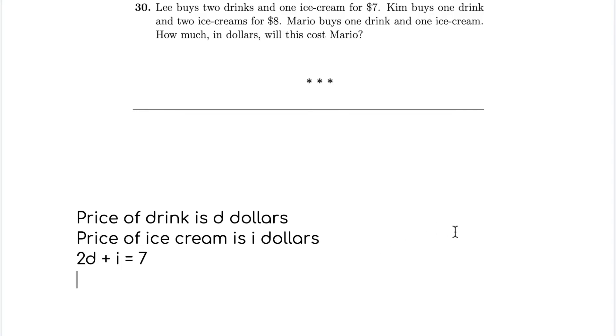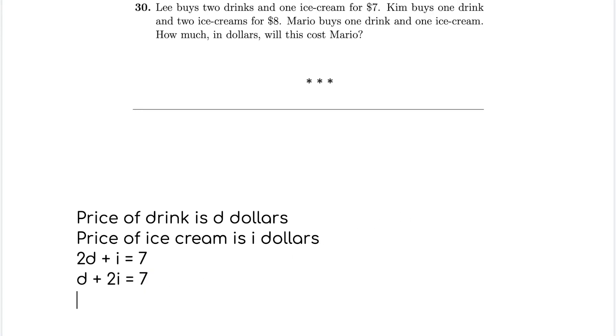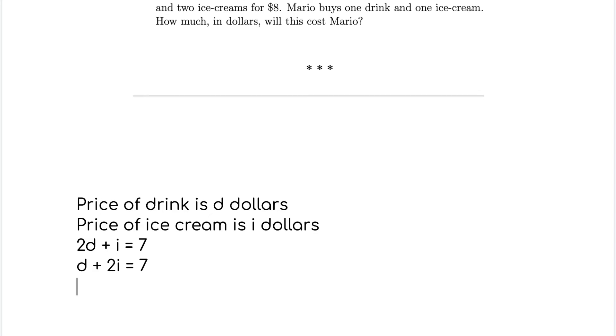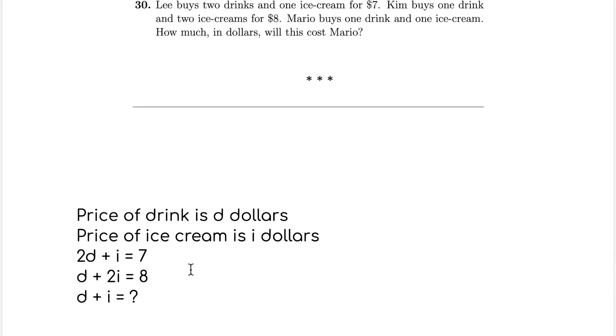Kim buys one drink and two ice creams for $8. So that means D plus 2I is $7. So now we need to find how much Mario, what Mario bought costs. So Mario got D plus I and we don't know what that is.